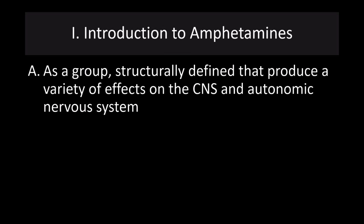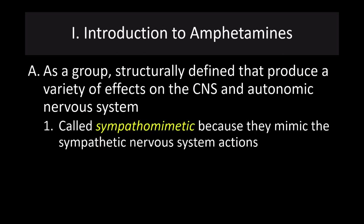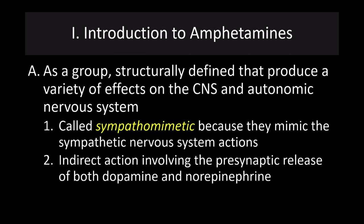As a group, these are structurally defined drugs that produce a variety of effects on the central nervous system and autonomic nervous system. They have a sympathomimetic effect because they mimic the effects of the sympathetic nervous system. They also have indirect actions involving the presynaptic release of both dopamine and norepinephrine — one of the significant differences between cocaine and amphetamines. Cocaine exerts its primary effect on dopamine, whereas amphetamines have a significant effect on norepinephrine in addition to dopamine. As a result, this pathomimetic response is much stronger because norepinephrine is the primary neurotransmitter in the sympathetic nervous system.